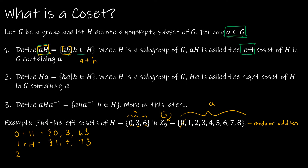Then 2 plus H gives us 2 plus 0, 2 plus 3, 2 plus 6. Now watch what happens with 3: 3 plus H gives 3 plus 0, 3 plus 3, 3 plus 6, which is 9, which is actually 0 mod 9.